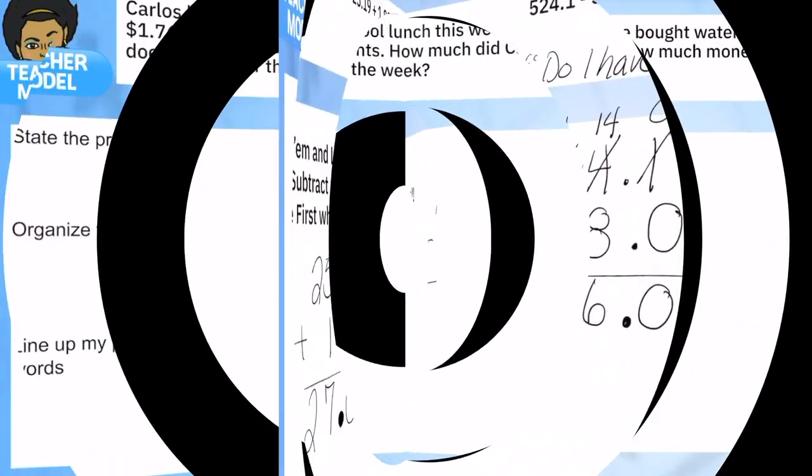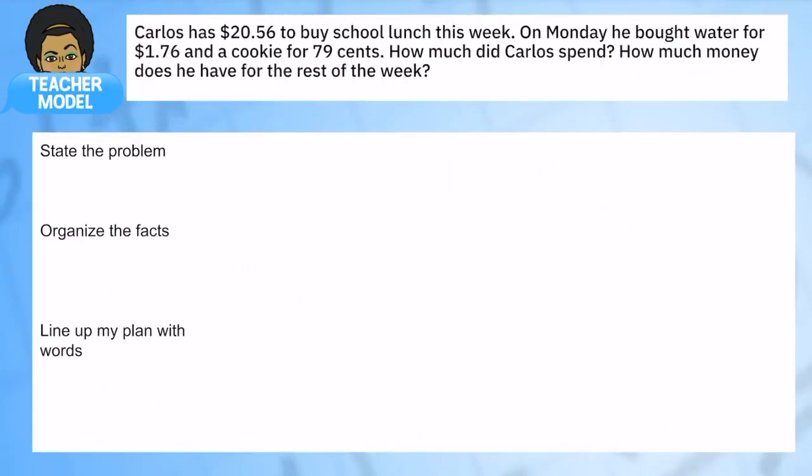Now we're going to get into our 6th grade teacher models. I'm going to use the acronym SOLVE to go through this, and the first three letters S-O-L are for stating the problem, organizing the facts, and lining up my plan with words. Take a moment to look at our problem for today: Carlos has $20.56 to buy school lunches this week. On Monday he bought water for $1.76 and a cookie for 79 cents. How much did Carlos spend? How much money does he have for the rest of the week?